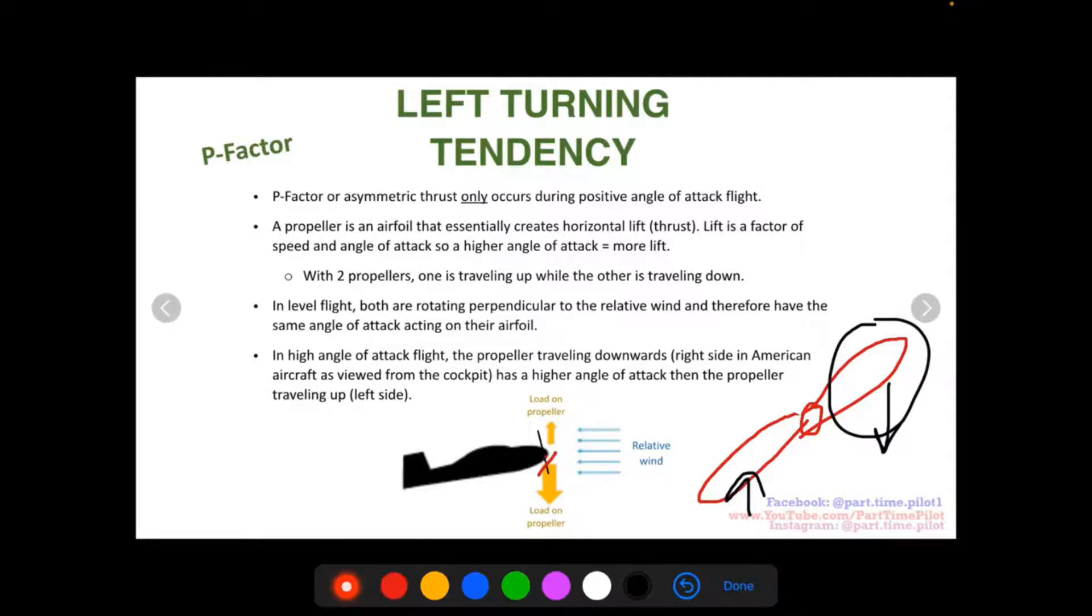So the load on the propeller, so the force that's created, again, because the right side has a higher angle of attack, the force on the right side here is going to be higher. So this is represented by this bigger arrow. And then the left side is the smaller angle of attack. So it's going to create less of a thrusting force on the left side.